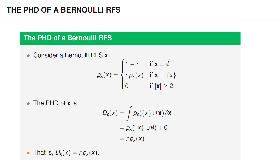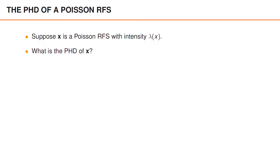Coming back to the interpretation of the PHD as the expected number of elements per unit volume, it makes sense that the PHD is small if either the existence probability r or the spatial PDF is small.